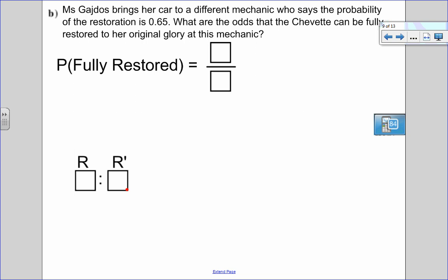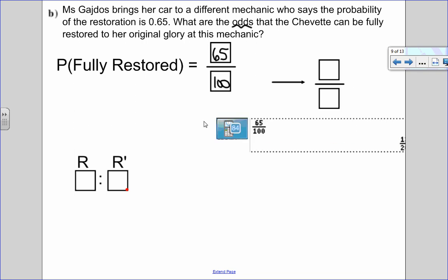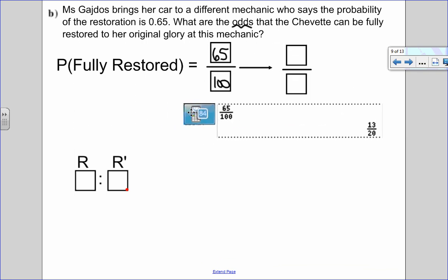I want to look at the other way around. Okay, so let's say I bring my car to a different mechanic. And he says that the probability of the restoration is 0.65. I want to know what are the odds the Chevette can be fully restored to her original glory. This time I want odds given probability. So I have the probability of it being fully restored is 0.65, which is 65 out of 100. Okay, so the first thing that I'm going to do is put that into lowest terms. I always want to work in lowest terms. So in lowest terms, that would be 13 out of 20. So that's the probability of a full restoration.